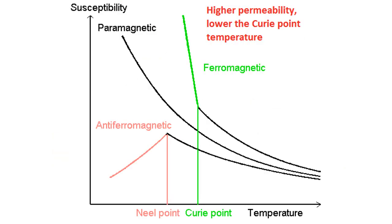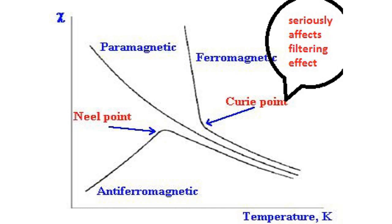The higher the permeability is, the lower the curie point temperature is. The permeability drops down rapidly after the curie point, then leading to inductive value drop-down of EMI power filter, which seriously affects filtering effect.